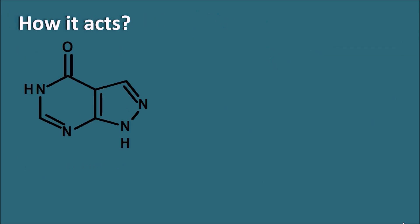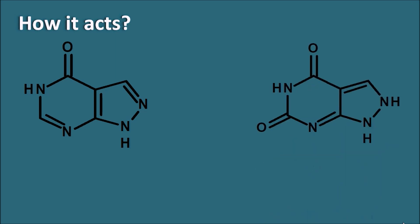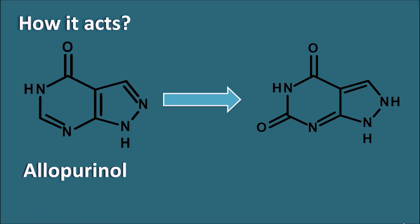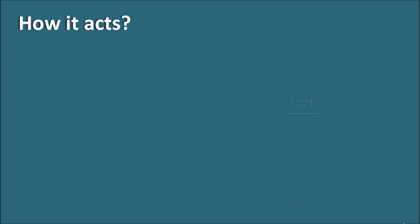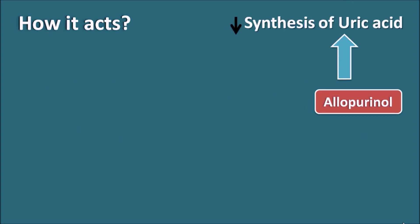How does allopurinol act? When allopurinol is administered into the body, it is metabolized into another structure. Allopurinol is converted into its metabolite oxypurinol, also called alloxanthine. In the structure of oxypurinol, there is an extra keto group present. Both allopurinol and its metabolite oxypurinol inhibit the synthesis of uric acid.